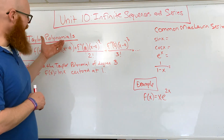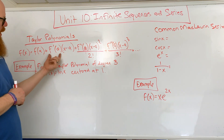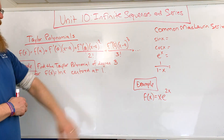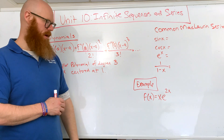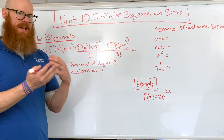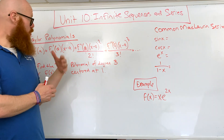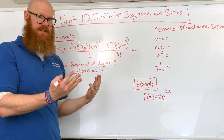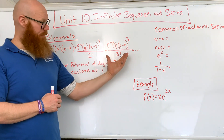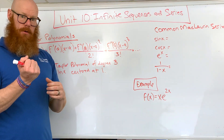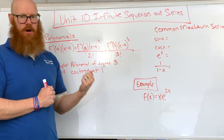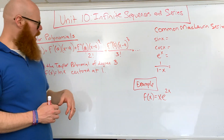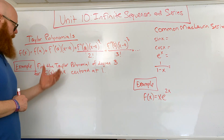Basically, a Taylor polynomial is where we do a set of things to create this polynomial and then we stop it somewhere. In this example, we're going to stop at degree three. Once we stop it, it becomes an approximation of that function. But if we make it a Taylor series or a McLaurin series where we continue it forever — a power series in general — then at infinity, if we do an infinite number of terms, the polynomial is exactly equivalent to whatever function it was approximating. It's a really cool concept.